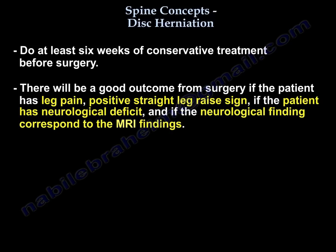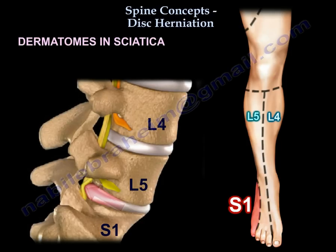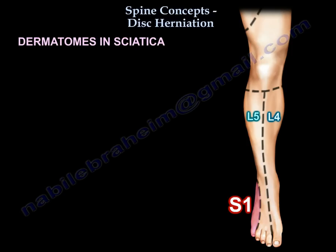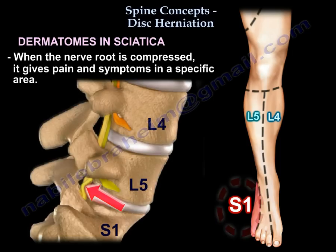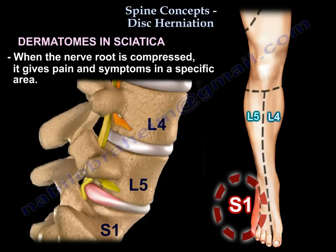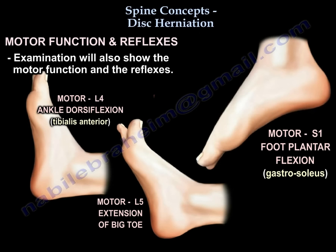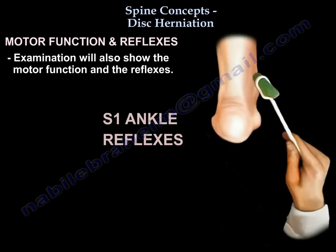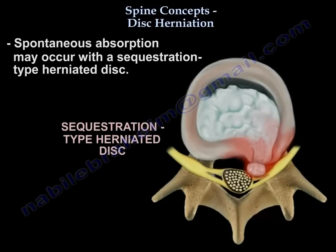Here is an example of the dermatomes in sciatica: L4, L5, and S1 sensory distribution. When the nerve root is compressed, it gives pain and symptoms in a specific area. The doctor's examination will also show motor and reflex changes. Note that spontaneous resorption can occur in a sequestered disc.